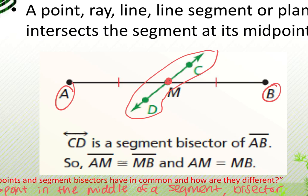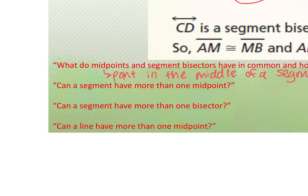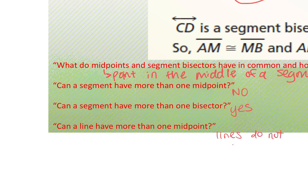Can a segment have more than one midpoint? No — there is exactly one point where it cuts in half; any other point will not divide the segment into two equal parts. Can a segment have more than one bisector? Yes — a midpoint, a line, or a ray can all be bisectors. Can a line have more than one midpoint? Lines do not have midpoints; only a segment can have a midpoint.